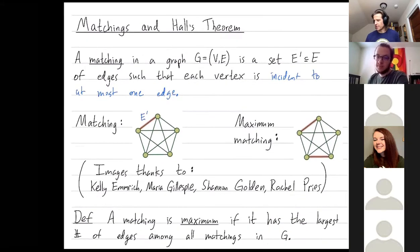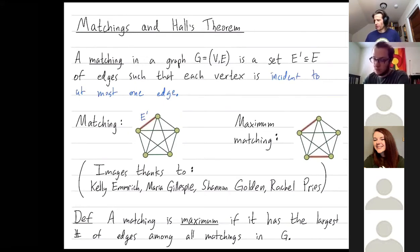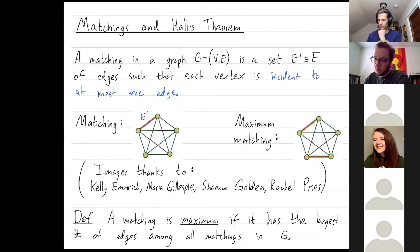A matching is maximum if it has the largest number of edges among all matchings. It turns out that any matching in this complete graph on five vertices can have at most two edges, so any matching with two edges is maximum in this example.